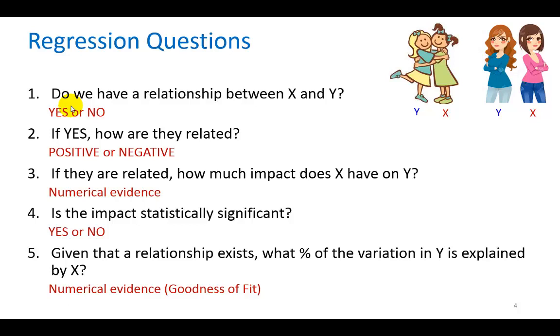There are five key questions we look to get answers to when we run a regression. Do we have a relationship between X and Y? That's the fundamental question, and the answer is going to be either yes or no. Number two, if the answer is yes, then how are they related? Are X and Y positively related, or do they have an inverse relationship in that they are negative? As I illustrate here, this would be a case where X and Y, if you think of them as two individuals who are friends, they have a positive relationship, and so they tend to move together in the same direction. On the other hand, they may not like each other, and so they probably tend to move in contrary directions.